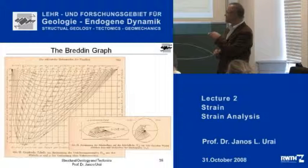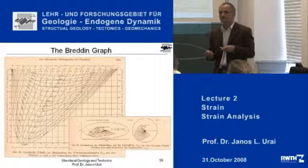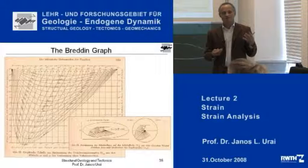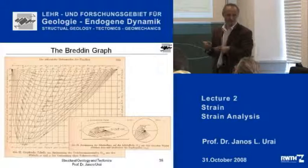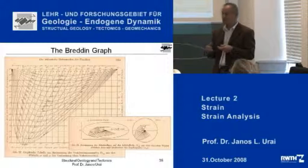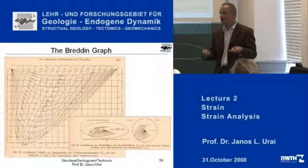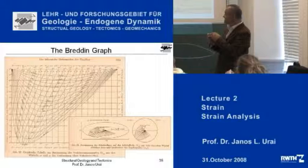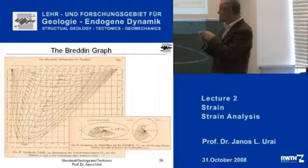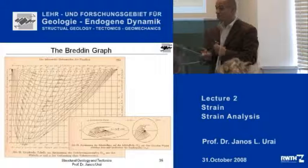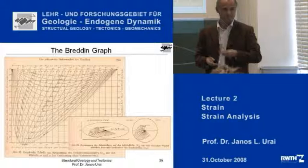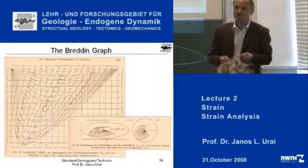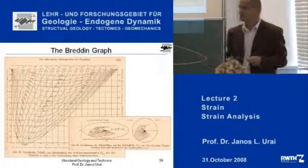You need at least three measurements to find which of these lines you are on. With two you can do it, but it will be very shaky. With three, and of course if you have five or six, then you can very easily determine that your ellipse is this one, and then you can back out how long it is and how much it has been shortened. So this is the Bredin technique — quite famous, made in Aachen.